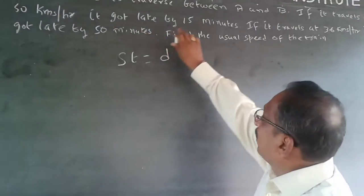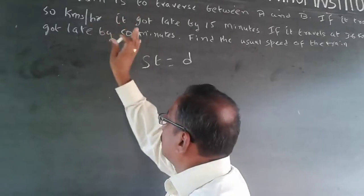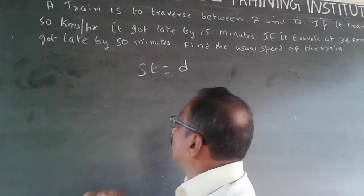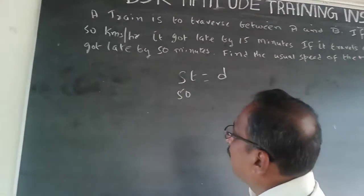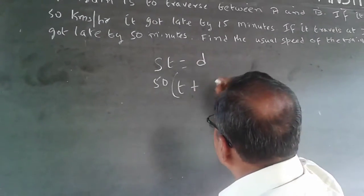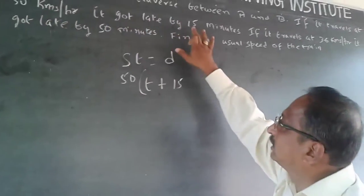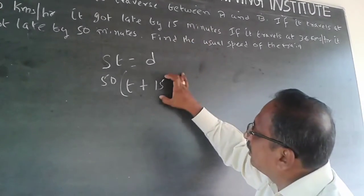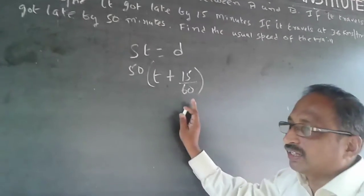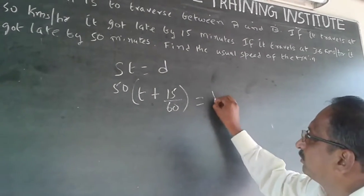Now, what the statement says is: if the train travels at 50 kilometers per hour — 50 is not the usual speed. The speed becomes 50, and the train is late by 15 minutes, so the time taken is T plus 15 minutes. Be very careful: speed is in km per hour but time is in minutes, so you must convert 15 minutes into hours: 15 by 60, which gives 1 by 4. So the equation becomes 50 into (T + 1/4) = D.